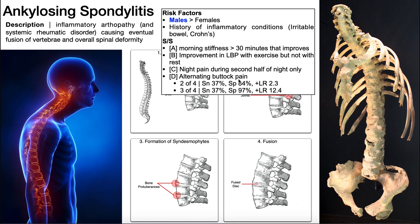However, the last two signs and symptoms are what really differentiate ankylosing spondylitis from osteoarthritis. The third is night pain — night pain is an automatic red flag, and this night pain is really during the second half of the night only. For osteoarthritis, there shouldn't be enough pain to keep somebody up at night, so we wouldn't expect night pain in OA. But we do have that in ankylosing spondylitis, especially during the second half of the night. And also we would see alternating buttock pain — pain on the left side, then it switches to the right, and it goes back and forth.